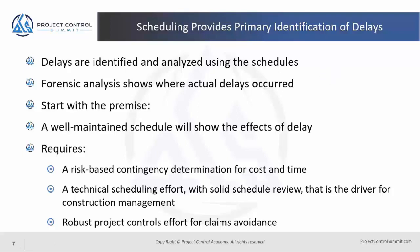To make sure we can identify delays and do something with them, I believe it requires first a risk-based contingency determination for cost and time. Every project should have contingency — it should be risk-based, identified based on a risk register of risks, not just a percentage. We can carry that in costs. The industry usually doesn't have a strong appetite for carrying time contingency, but we can carry it in a management reserve, or we can go into the schedule and make sure there's adequate time.